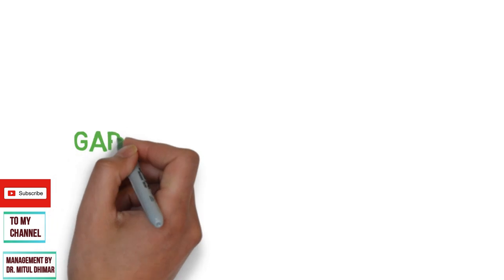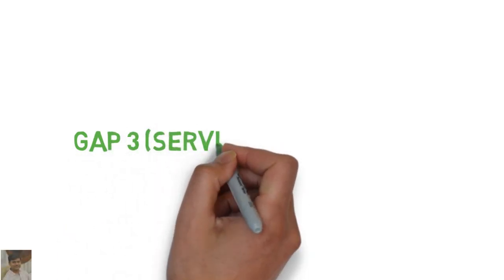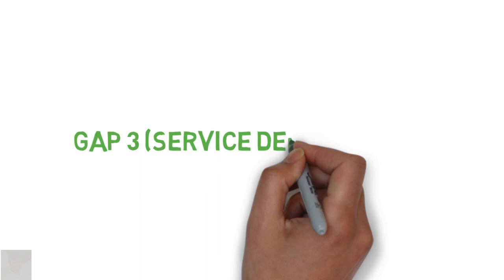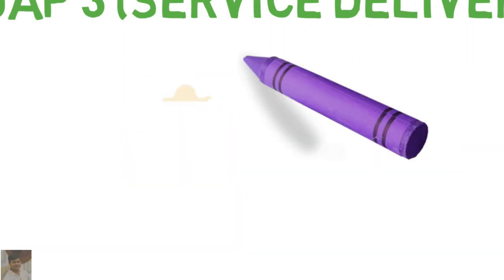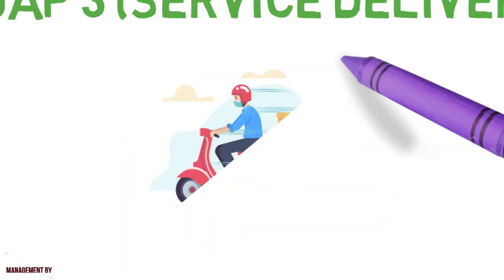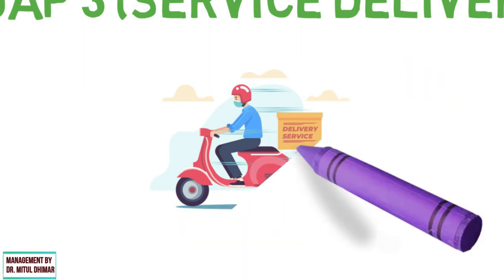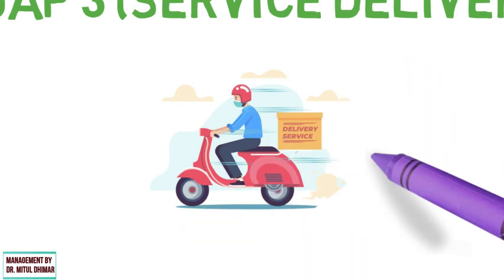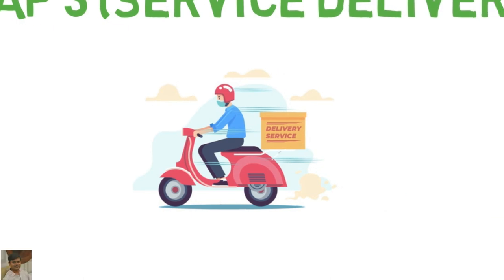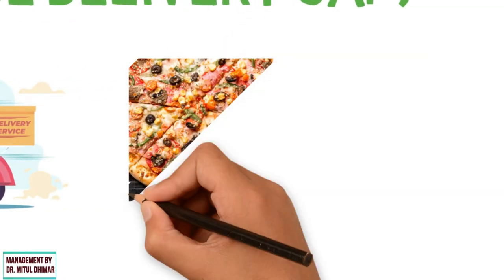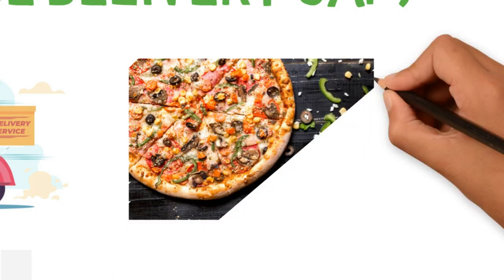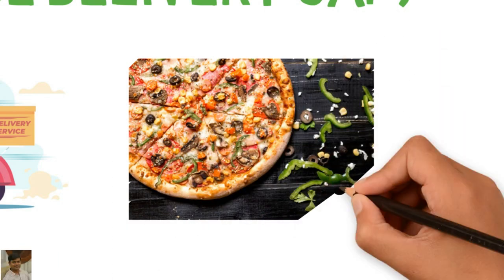Gap number three is the service delivery gap. This gap occurs due to the difference in the service delivery standard and the actual service delivery by the employees. This means that the quality specifications laid down for the staff to follow were not met at the time of service production and delivery. For example, if Domino's Pizza were to suffer from this gap, it could be because when the customer orders a specific pizza, they are informed that the kitchen has run out.